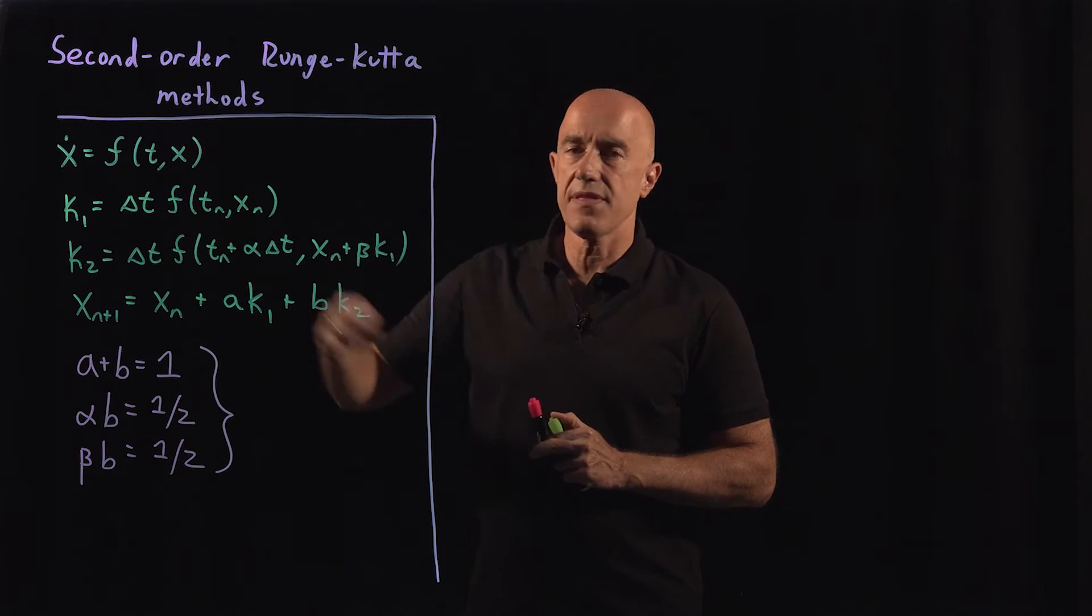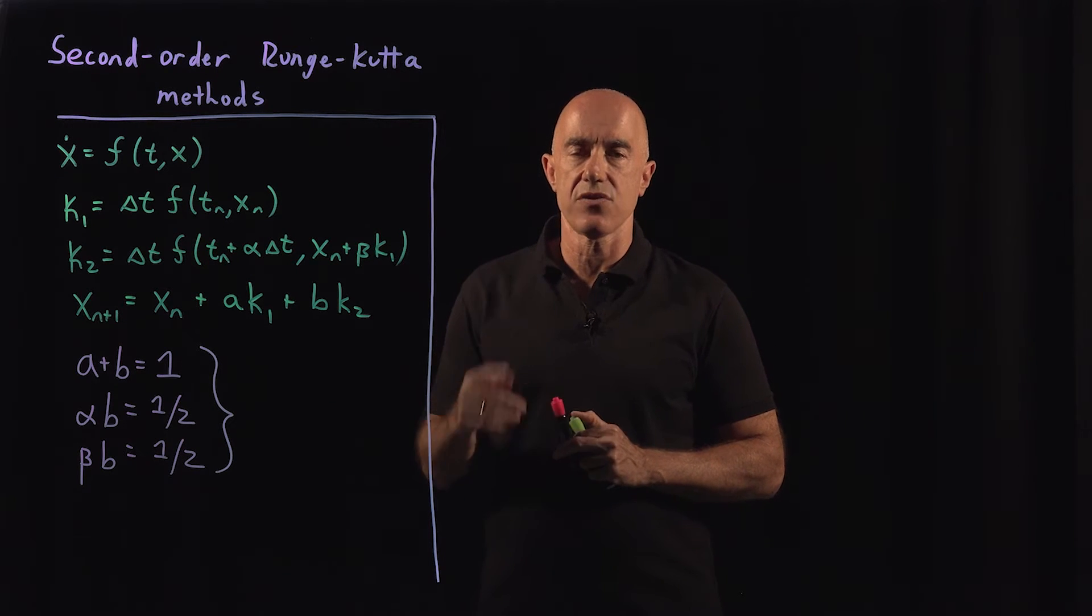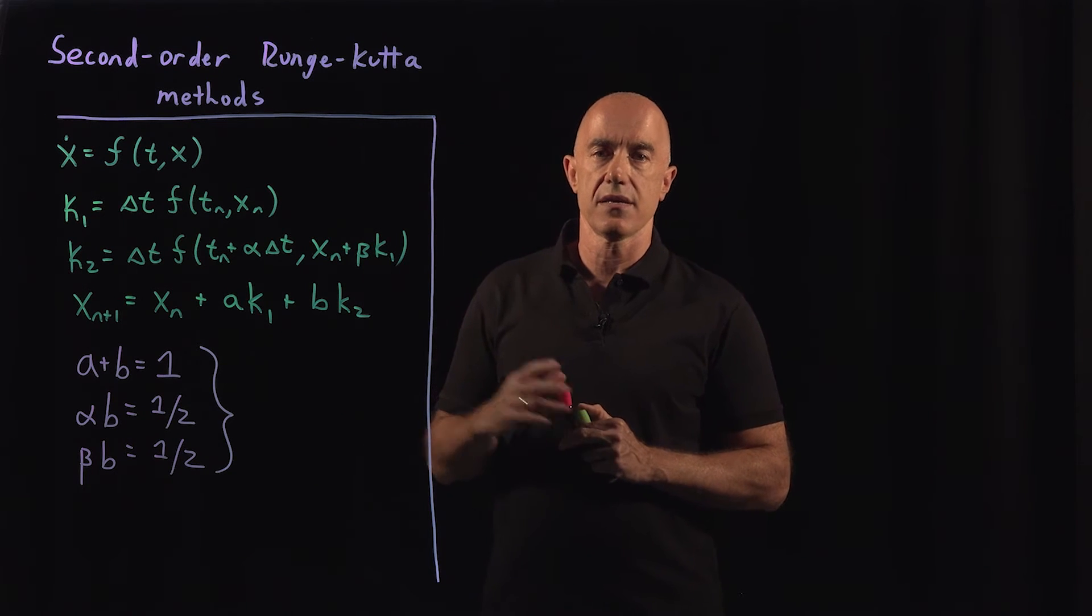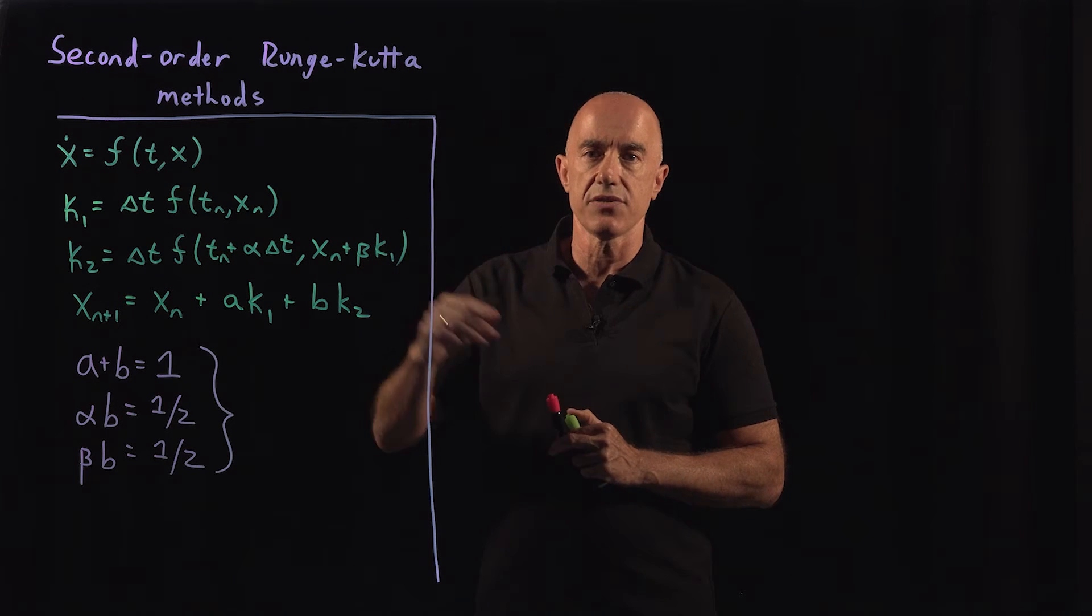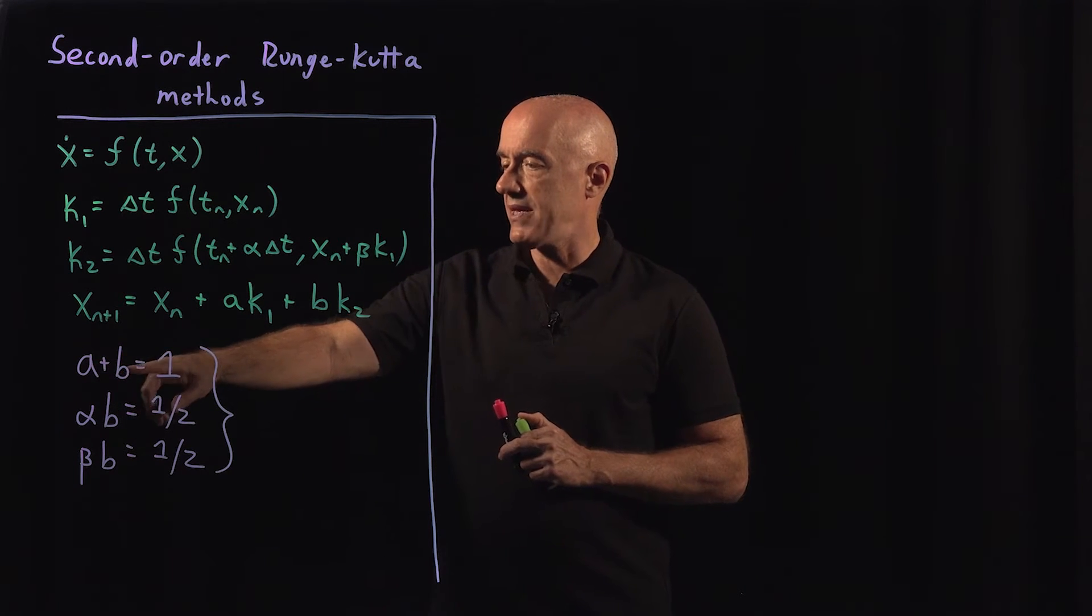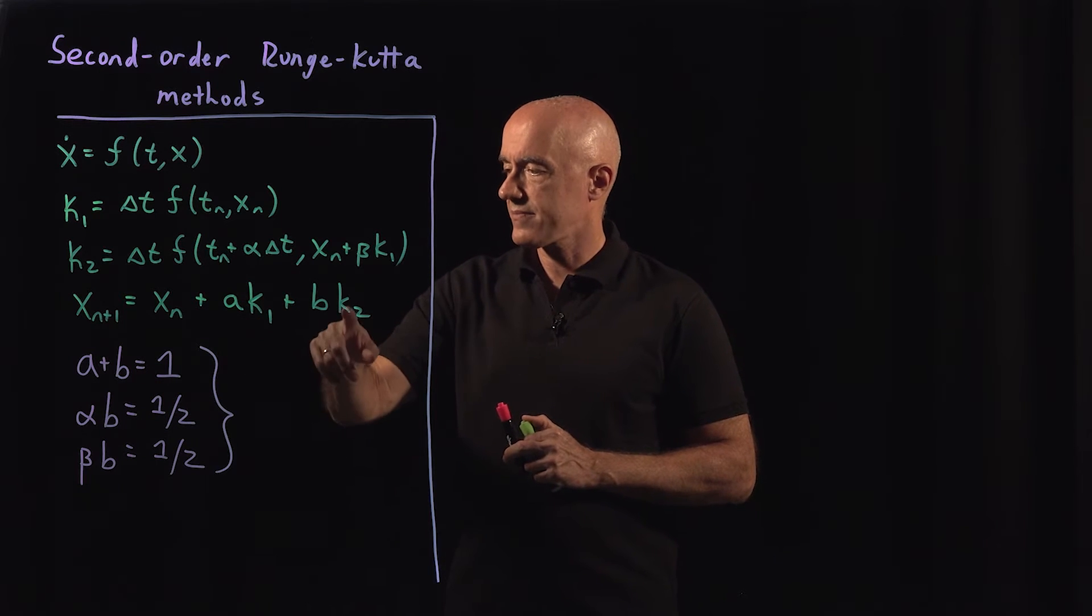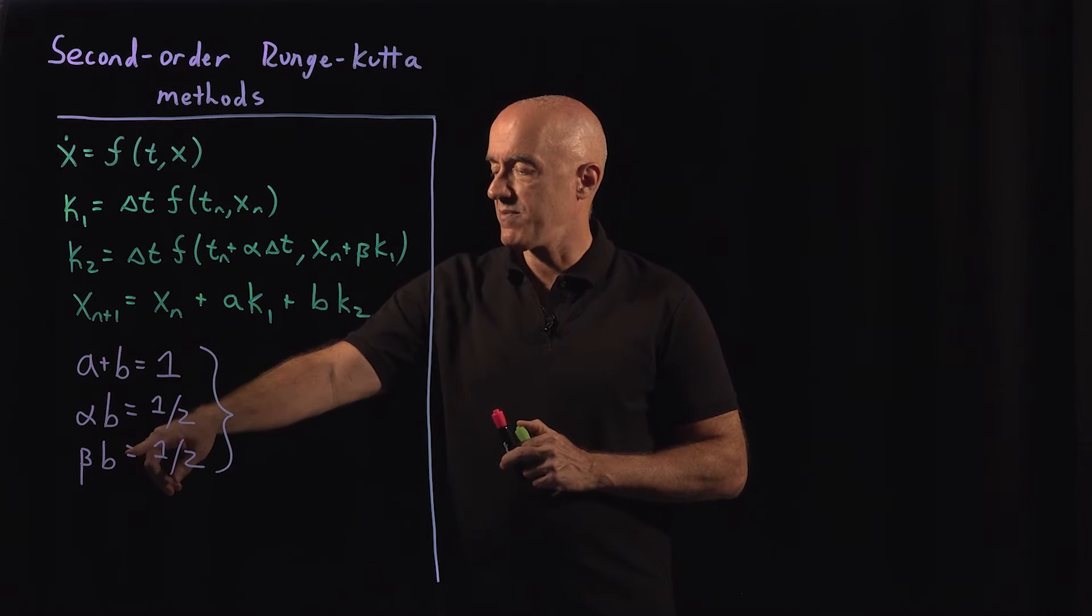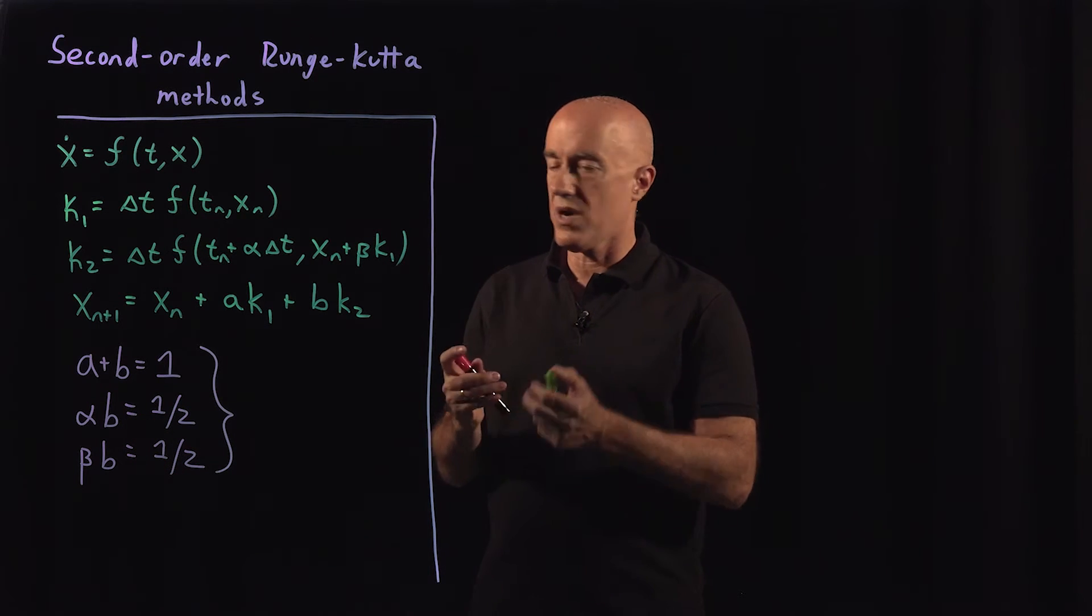In order for this method to be accurate to second order in time, so containing all terms up to including delta t squared, we derive that a plus b has to be equal to 1. Alpha times b has to be 1/2, and beta times b also has to be 1/2.